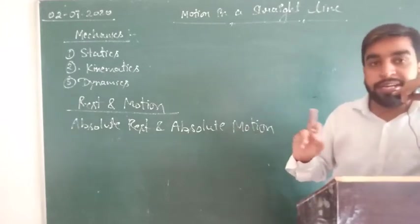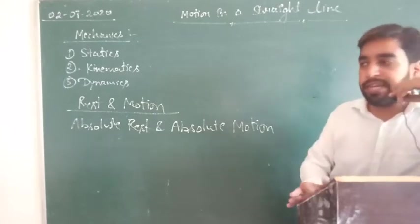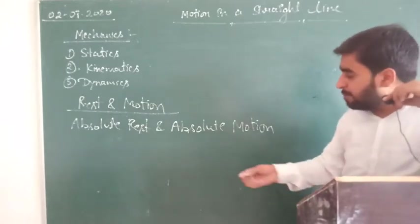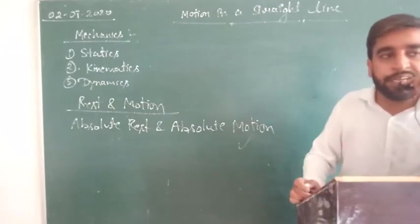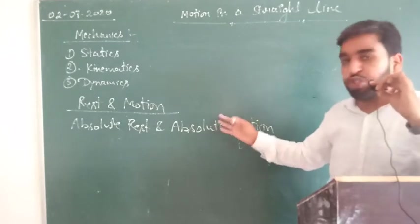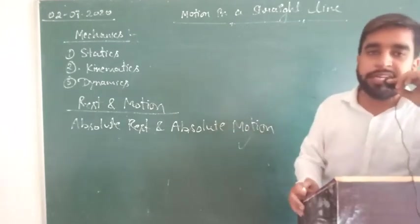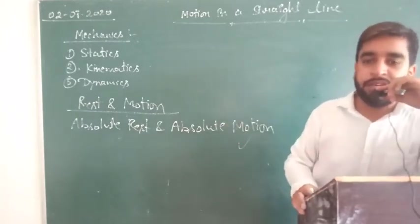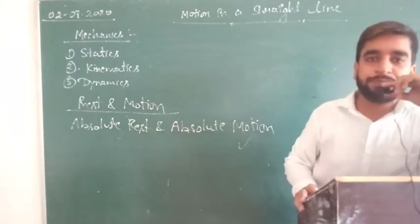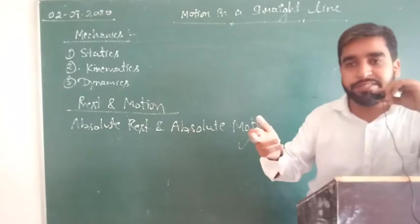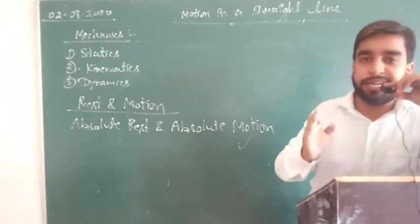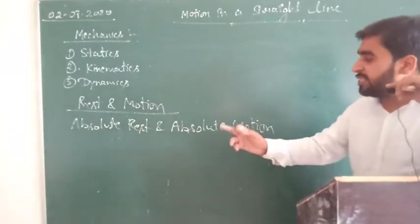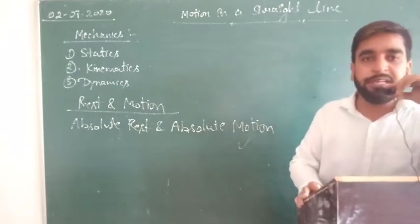So we are not at absolute rest at any time — we are in motion all the time. Absolute rest is not possible. Similarly, absolute motion is also not possible. Suppose you are dropping a relative at a railway station and that relative is now in the train. He is in motion for you, but for the passengers in the train, he is at rest because his position is not changing for them. So absolute rest and absolute motion both are not defined or possible in physics.